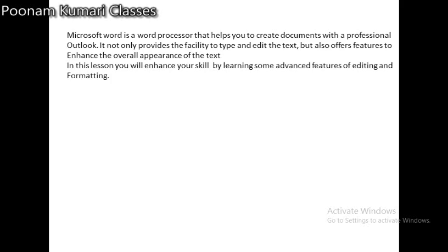So let's start the chapter. See your first paragraph. Microsoft Word is a Word Processor that helps you to create documents with a professional outline. Microsoft Word is a software in which we type words and give them a professional look, so our document looks like a professional. It not only provides the facility to type and edit the text, but also offers features to enhance the overall appearance of the text.